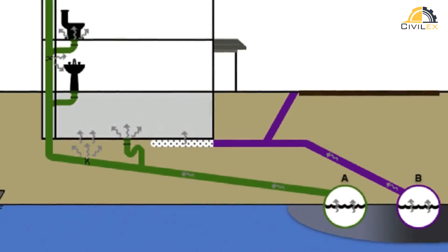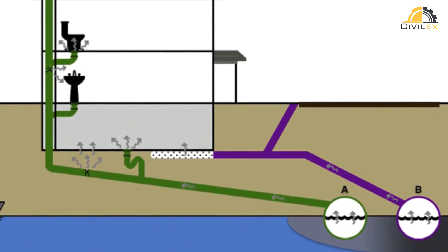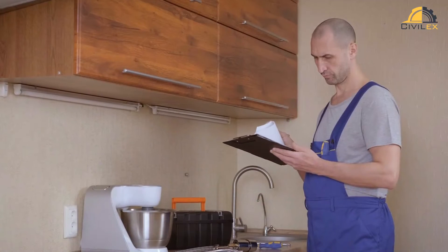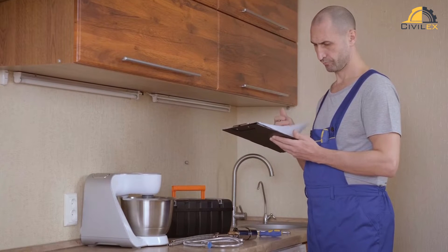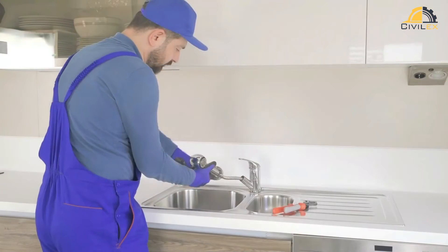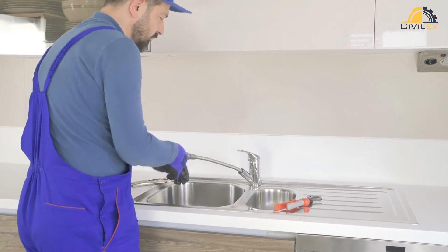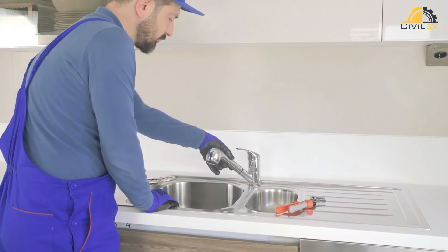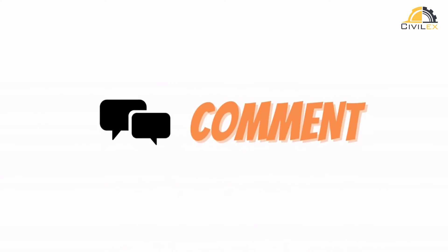In summary, sewage systems are a critical part of building infrastructure that requires proper management and maintenance. By following best practices and taking preventative measures, you can help to prevent common sewage system problems from occurring in your building. If you need help with your sewage system or have any questions, be sure to contact a qualified plumber or building maintenance professional. Thank you for watching and don't forget to like and subscribe to our channel.